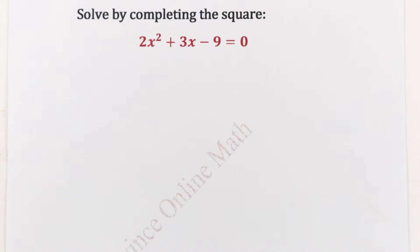Welcome to Calvin's online math. Let us look at this interesting question: solve by completing the square. 2x squared plus 3x minus 9 is equal to 0.